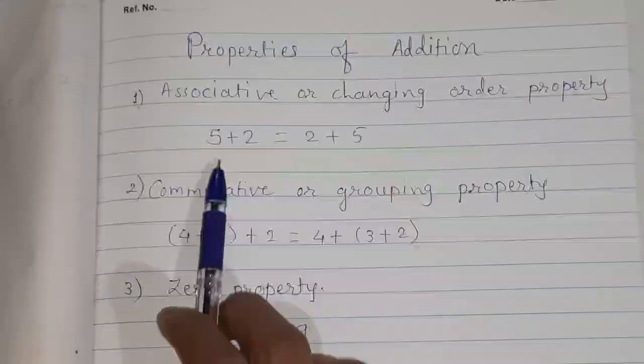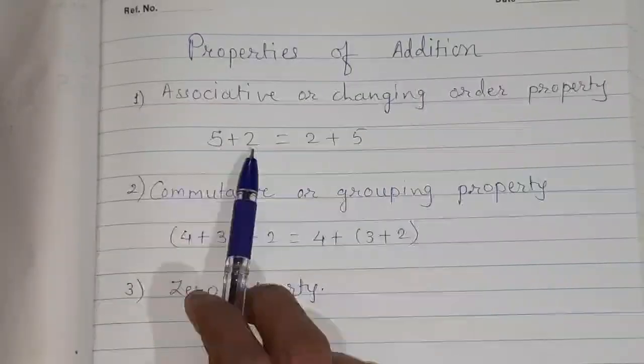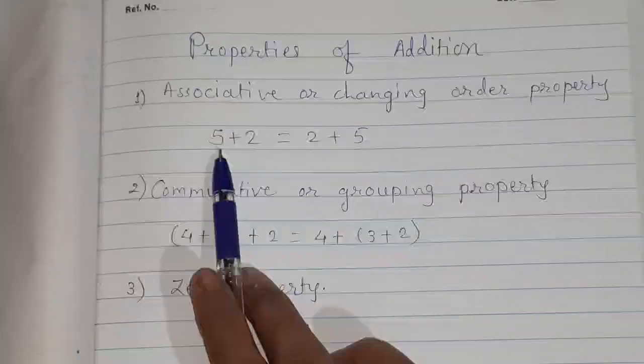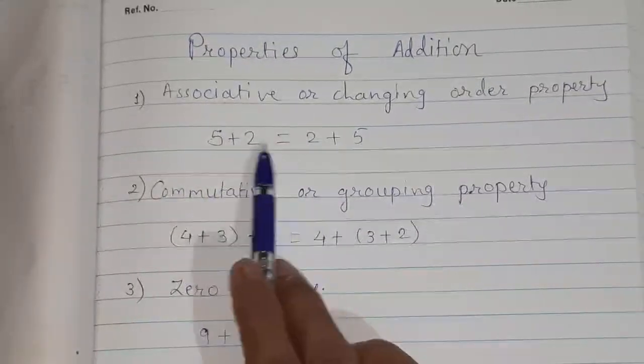What is it? If we are doing 5 plus 2, it is same as 2 plus 5. Here, the order of numbers are changed.